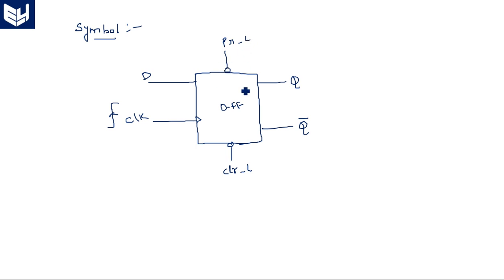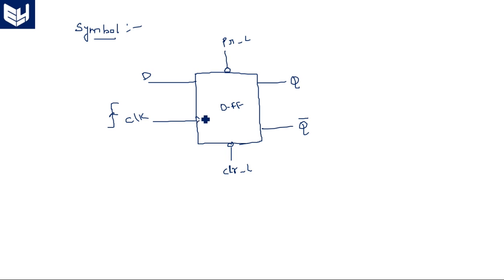As explained for the JK flip-flop, preset is used to set the output prior to any input or clock influence. When preset is enabled, the output is set regardless of the data and clock conditions. When clear is enabled, the output is cleared to zero, irrespective of the input states. Both preset and clear are high-priority signals.